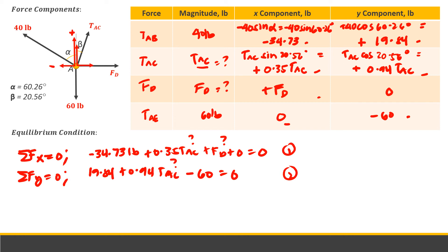From the two equations, first equation has two unknowns. But in the second equation, we have one unknown, so we can solve TAC from this equation. Transpose, so TAC equals 60 minus 19.84 over 0.94. Therefore, TAC equals positive 42.72 pounds. Positive indicates that our assumption that TAC is in tension is correct. For some problems, if it's negative, it means the assumption is wrong and it should be in compression. But positive result means the TAC is in tension.